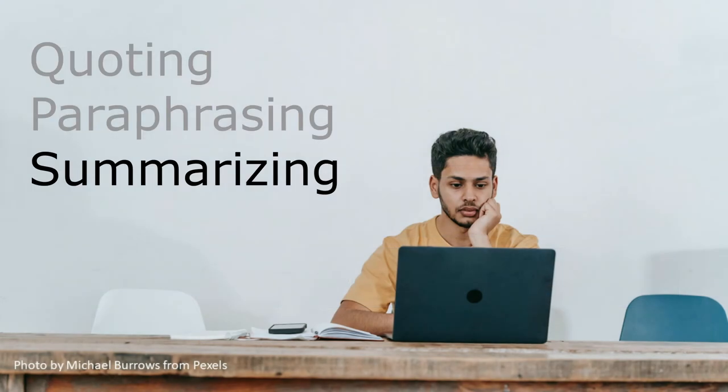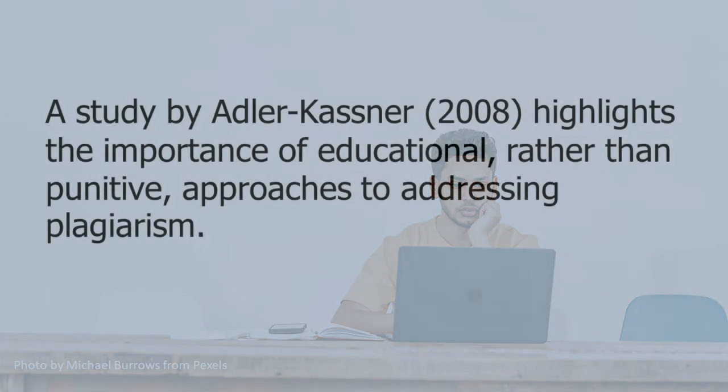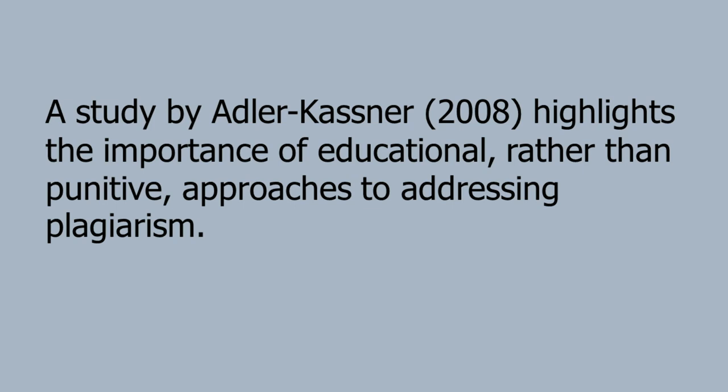Unlike quoting and paraphrasing, a summary focuses only on the main idea from a source. While the other methods point to specific parts of the source and the specific ideas in those parts, a summary will give a general overview of what the source, for example, an article, chapter, or book, is saying.